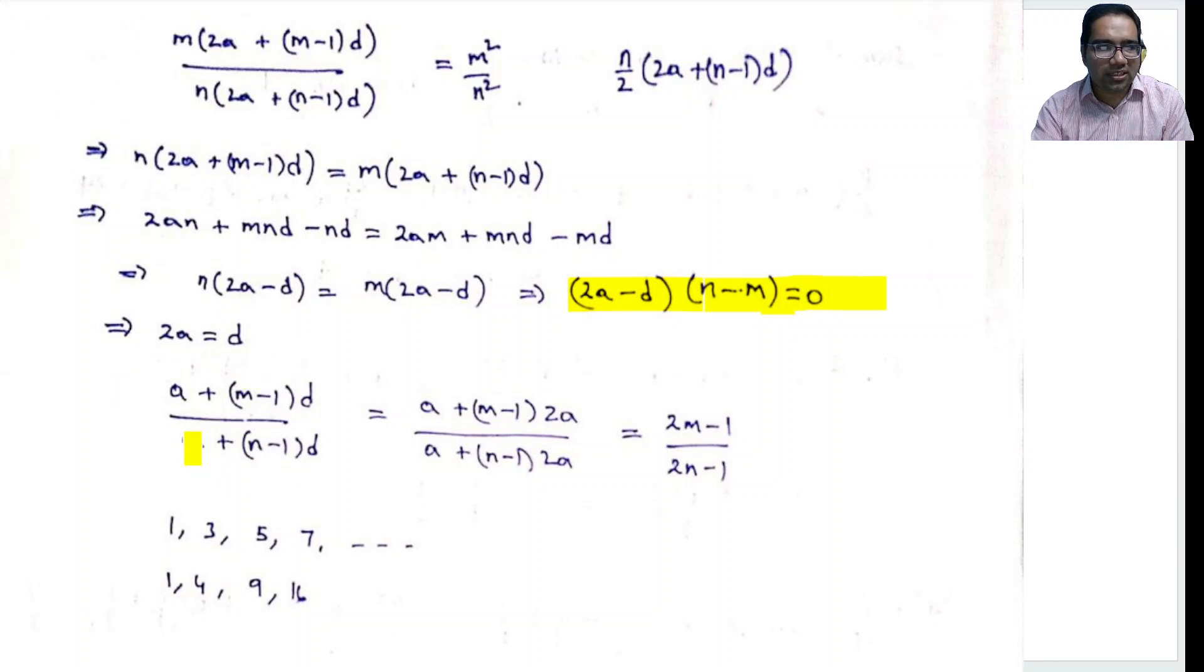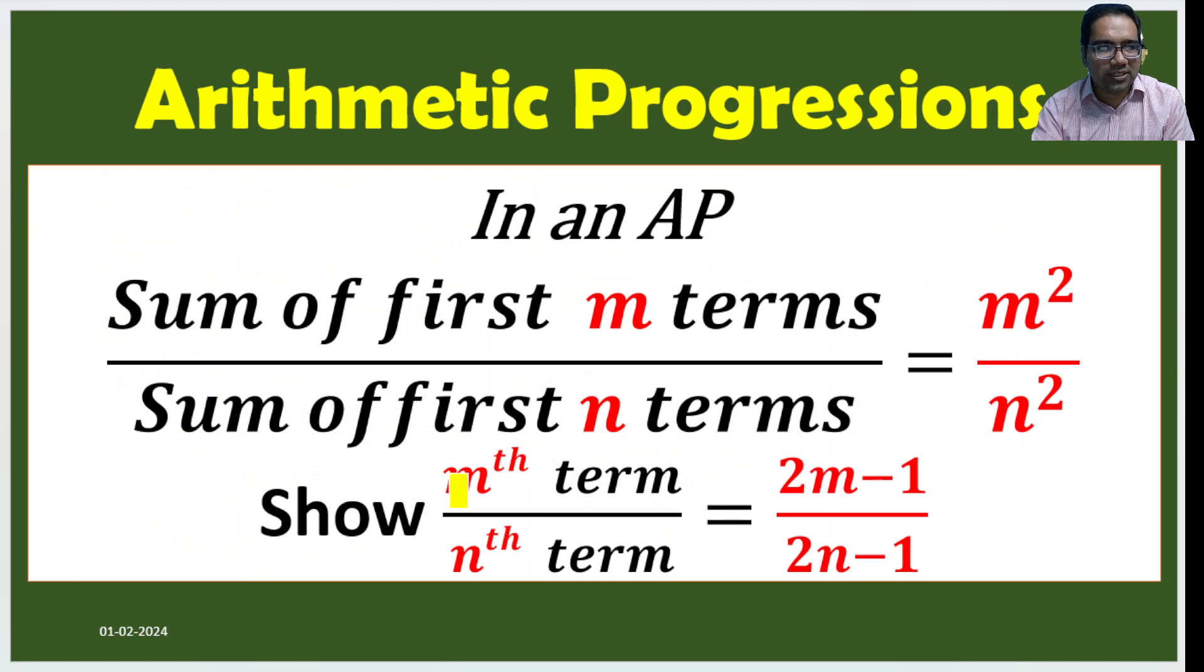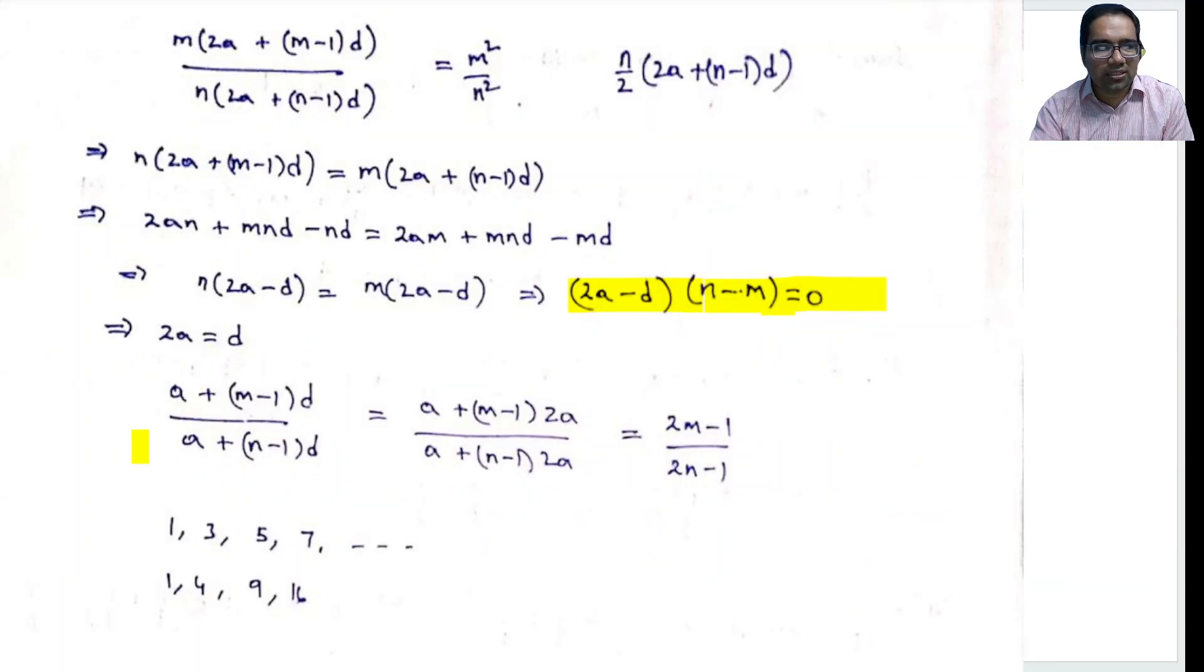What is m-th term? a + (m-1)d. What is n-th term? a + (n-1)d. So we want to say what is m-th term by n-th term. M-th term by n-th term equals [a + (m-1)d] by [a + (n-1)d]. Let us substitute 2a in place of d: [a + (m-1)·2a] by [a + (n-1)·2a]. We can open this and then all a's will cancel. In the numerator also a's are there. All a's will cancel and we will be left with (2m-1) by (2n-1). A's we can take common and cancel that. We will be left at (2m-1) by (2n-1). This is what we wanted to prove and this also says the numbers are in this form.